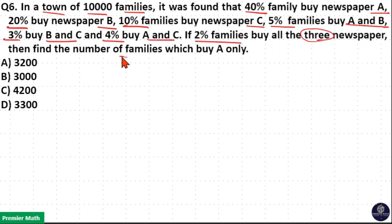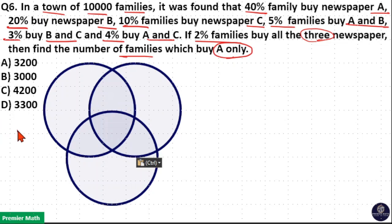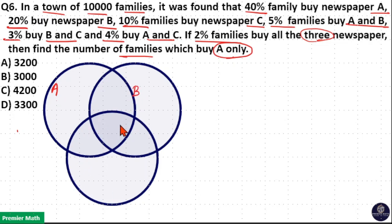then find the number of families which buy A only. If you draw a Venn diagram, it is easier to find the answer. Consider the first full circle as newspaper A, the second full circle as newspaper B, and the third full circle as newspaper C.